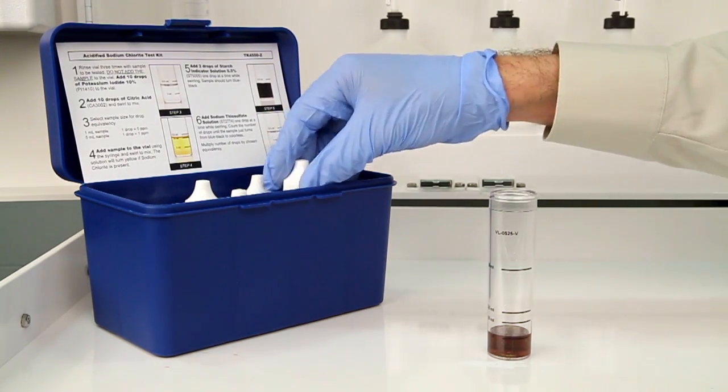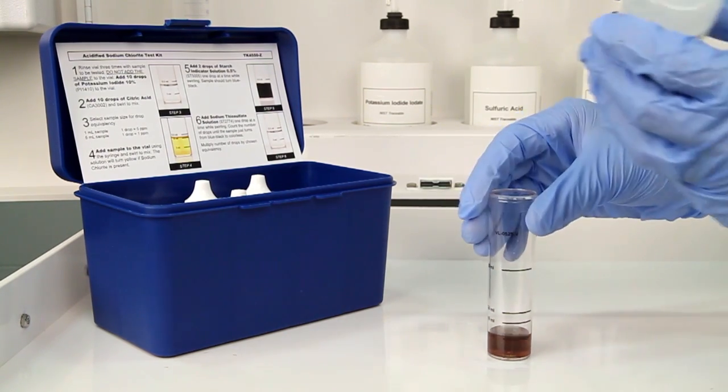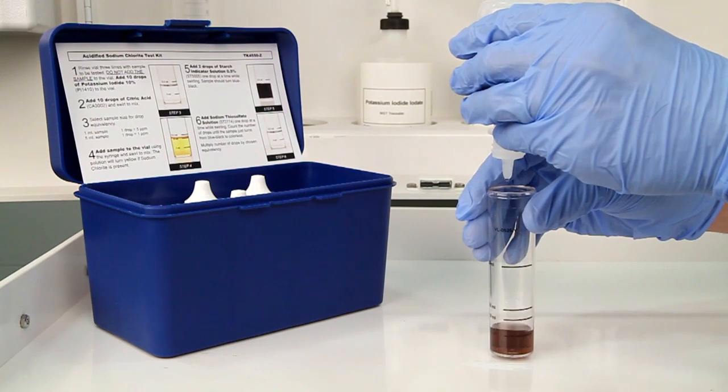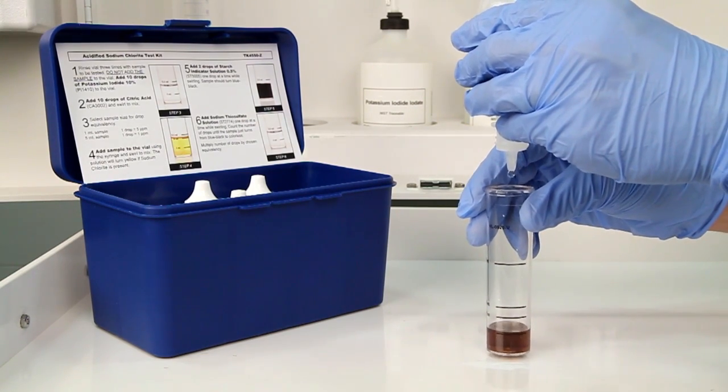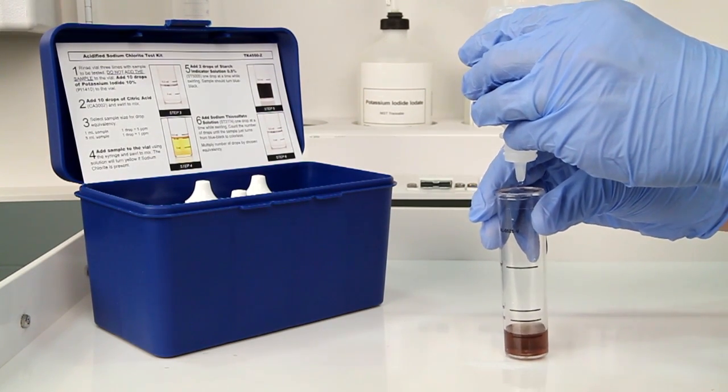The next step is to perform the titration using sodium thiosulfate solution. Each bottle of titrant is labeled with the equivalency and sample size it was manufactured for. It's important to make sure you have the proper titrant and the proper sample size for this titration.